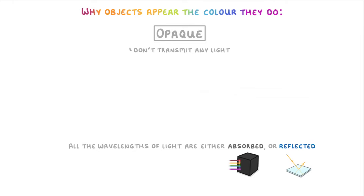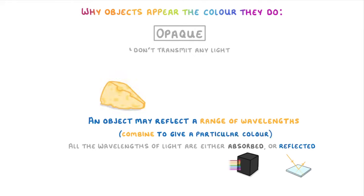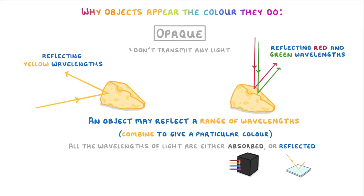In some cases though, an object might reflect a range of wavelengths that together combine to give a particular colour. For example, this piece of cheese might appear yellow because it's reflecting yellow wavelengths, or because it's reflecting both red and green wavelengths, which combine to make yellow.